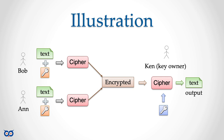Now let's write some code. Unlike symmetric encryption where I could easily show a simple XOR cipher for illustration, we will not implement our own asymmetric cipher — that's far too complicated. But we'll use existing code to demonstrate generating a key pair, saving the keys to separate files, encrypting text with the public key, and decrypting it with the private key.